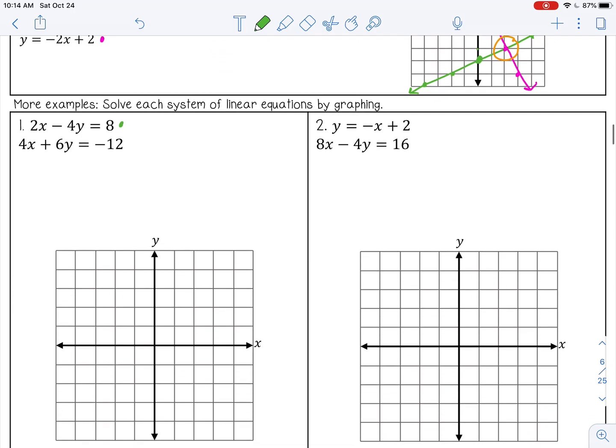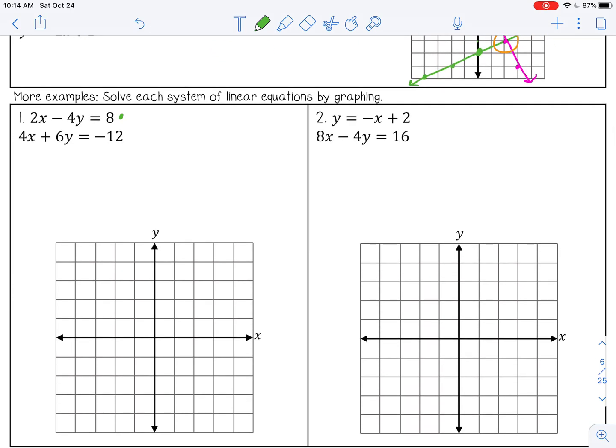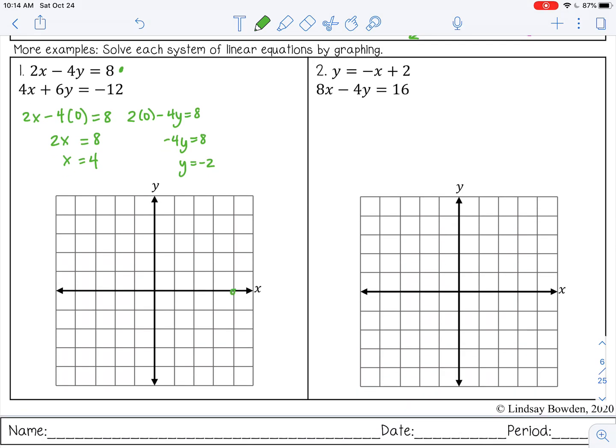2x minus 4y equals 8. These are in standard form, so I'm going to use my intercepts, my x and y intercepts, to solve. I can substitute in zero for y to find my x-intercept, so 2x minus zero is just 2x, so x is four. And I can substitute in zero for x to find my y-intercept.